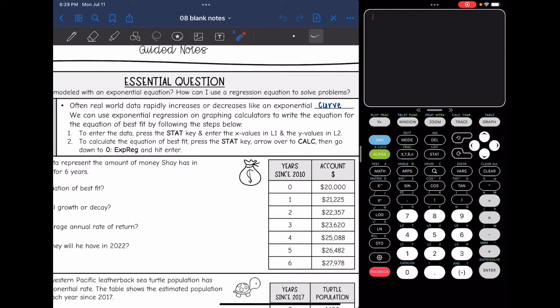Often real world data rapidly increases or decreases like an exponential curve. So we can use exponential regression on graphing calculators to write the equation for the equation of best fit by following the steps below.